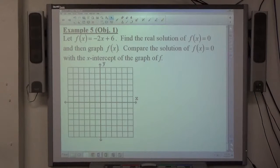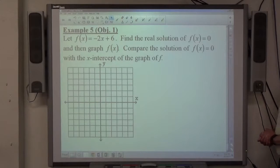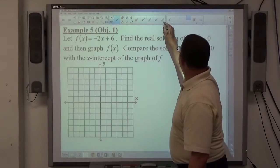Example 5 from 2.3, it says let f of x equal negative 2x plus 6, find the real solution of f of x equals 0, and then graph f of x. First off, this first direction.